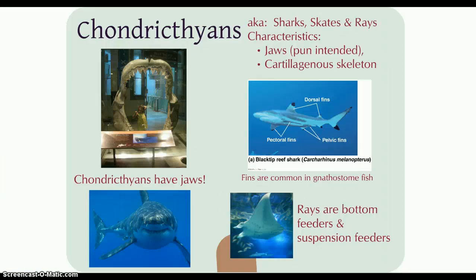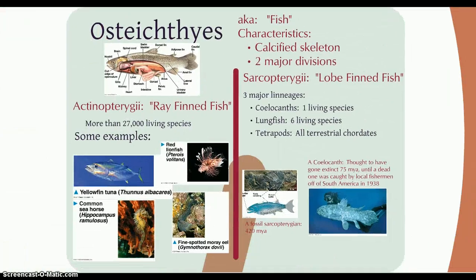The first type of organism we'll look at here are the chondrichthyes, or chondrichthians. Chondro means cartilage, so these are fish with cartilaginous skeletons. We predominantly think of sharks, but rays can be included as well. They are jawed craniates that have vertebrae and a cartilaginous skeleton.